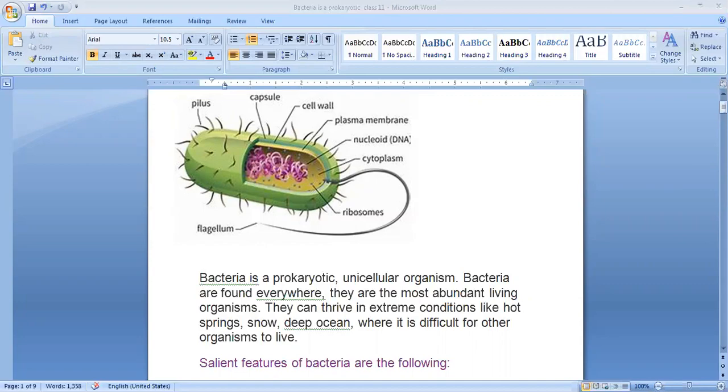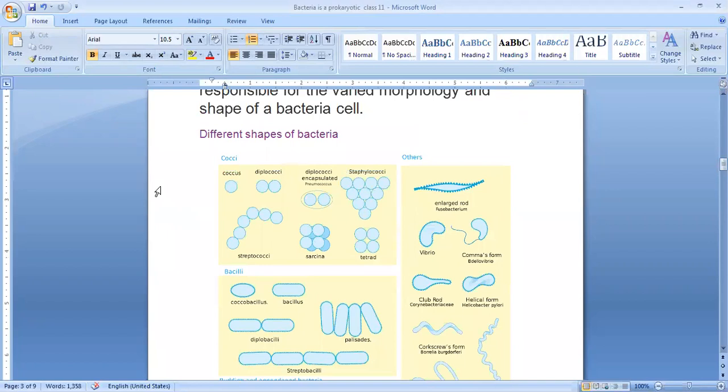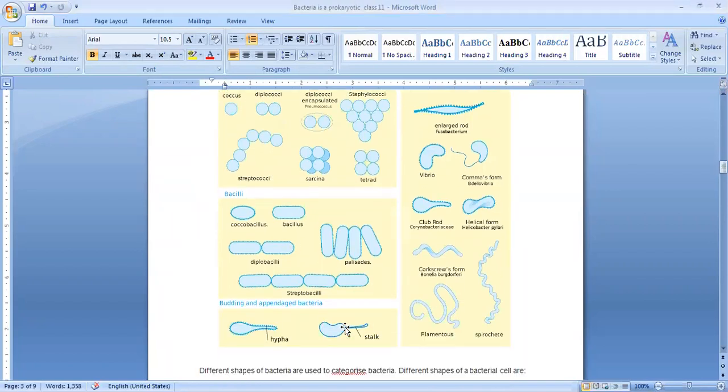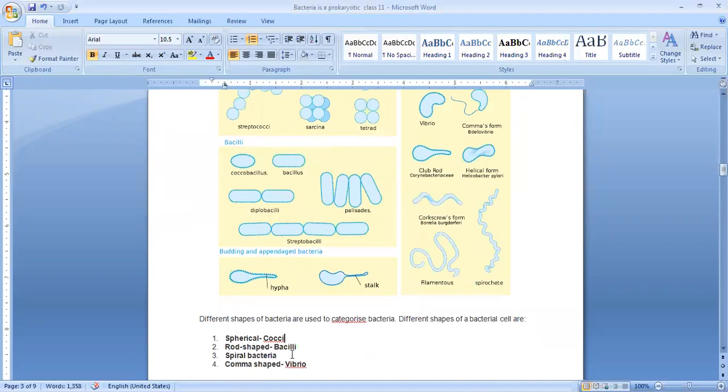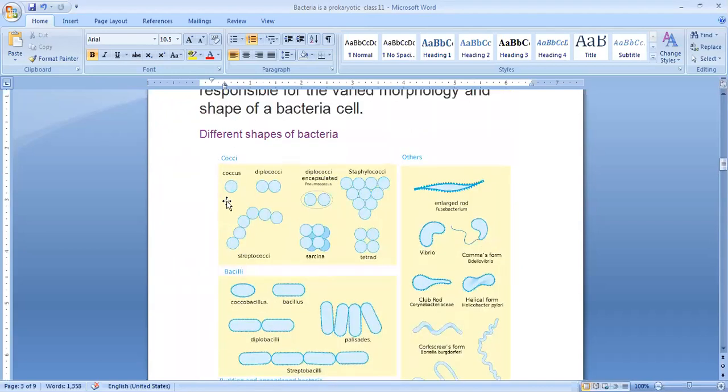If we see the structure of this prokaryotic cell shapes, the prokaryotic cells are found in 4 different types of shapes. These are the 4 different types of shapes. Let us see what are they. The first one is coccus. Coccus means spherical in shape. So bacterial cells can be found in spherical shape and that structure is called as coccus. It can be monococcus when it is single, diplococcus when it is in 2, triplo when it is in 3, tetra when it is in 4 and so on.